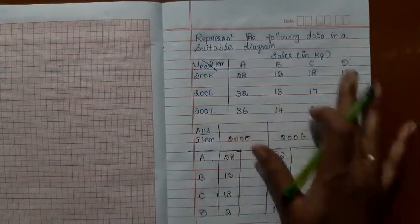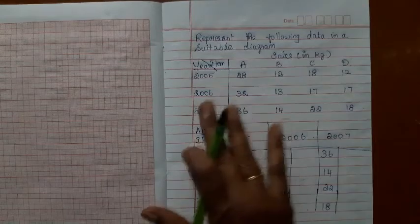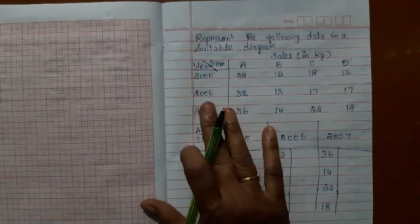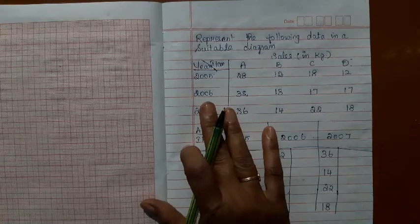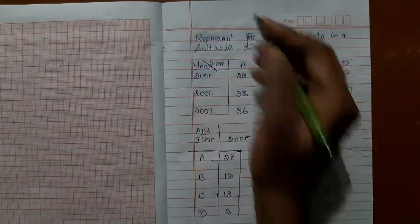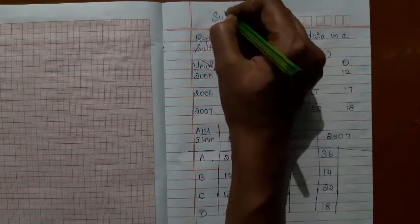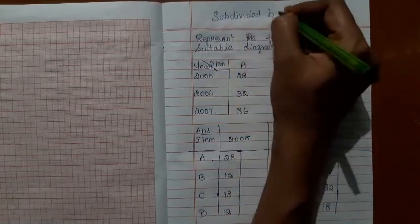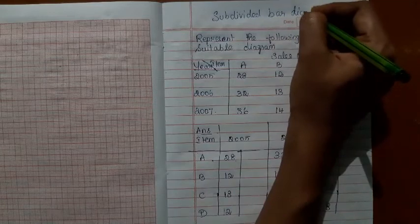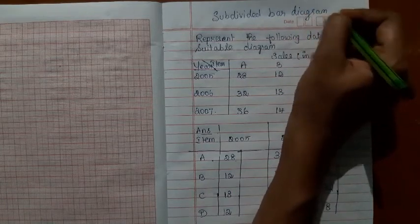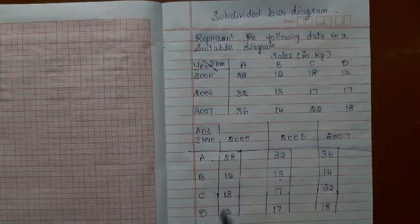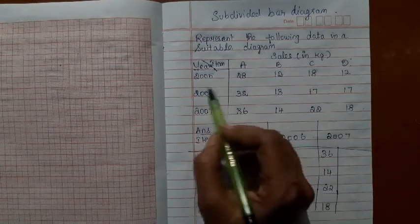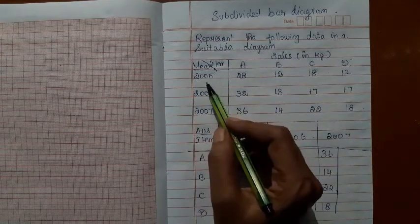You have this classification based on two factors. You cannot draw a simple bar diagram. You can construct a multiple bar diagram, but instead I would like to have a subdivided bar diagram here. Multiple bar diagram can be drawn, but still I prefer to have a subdivided bar diagram. Among these two characteristics, I take year as the main characteristic.